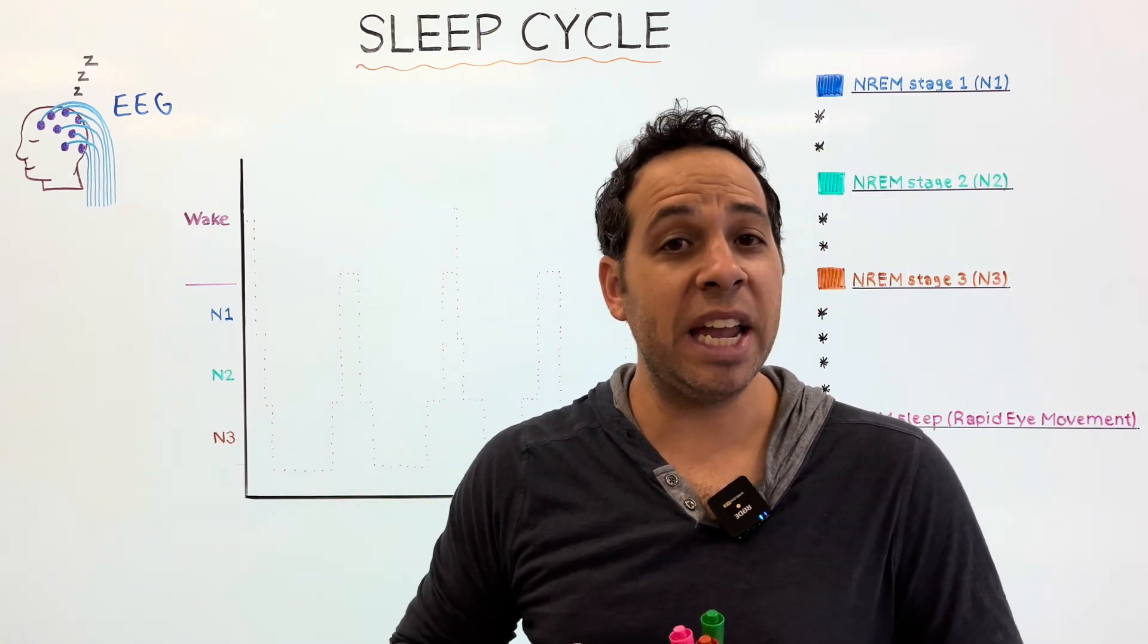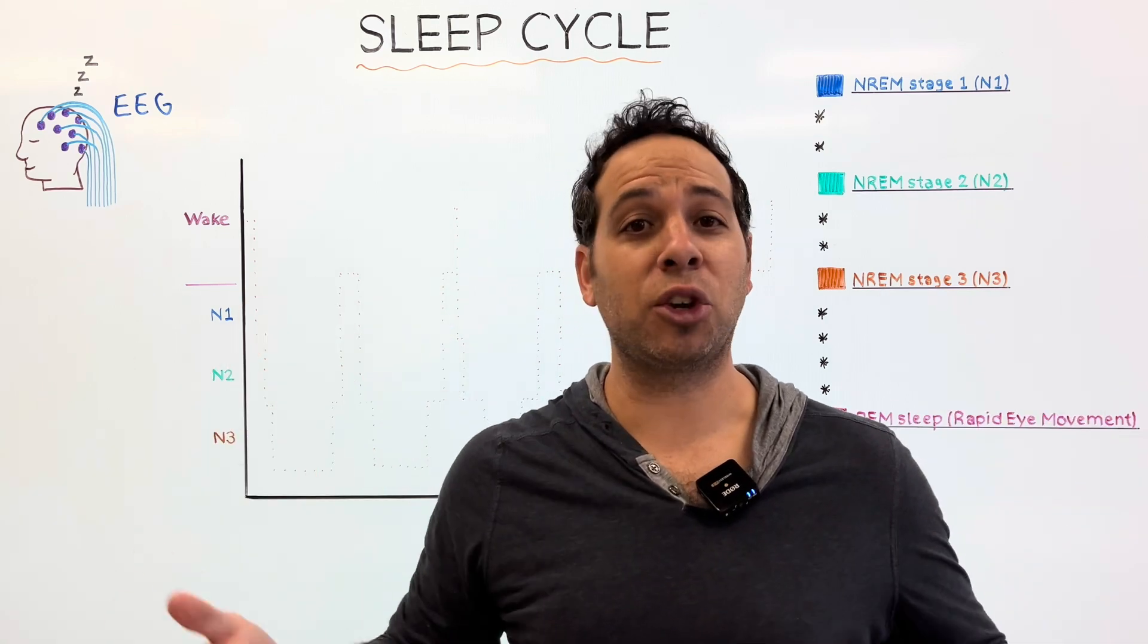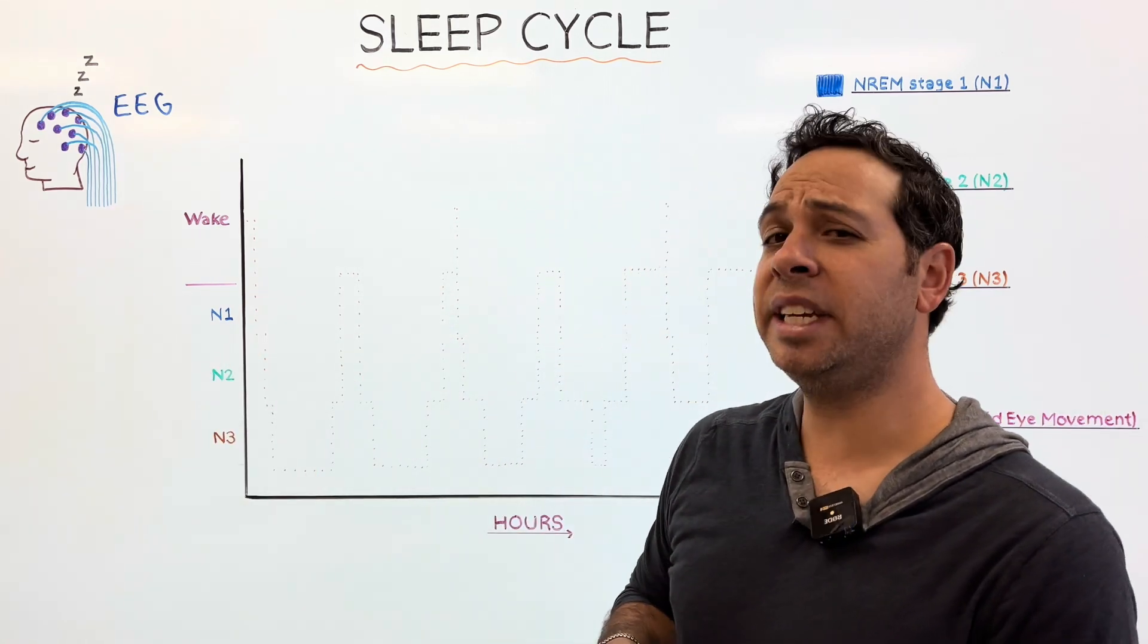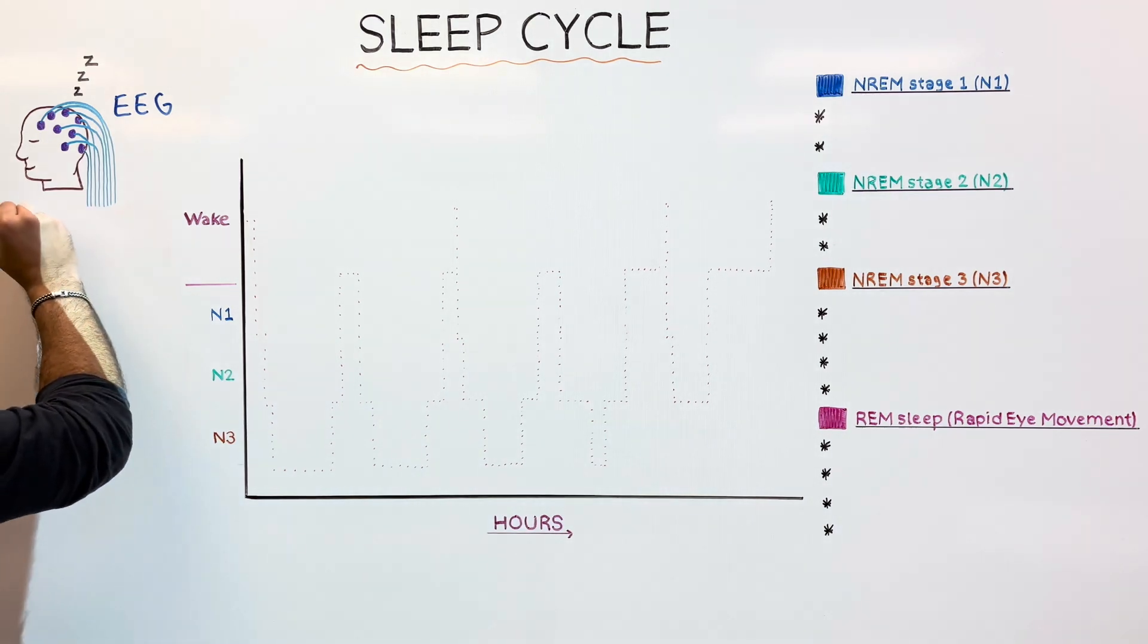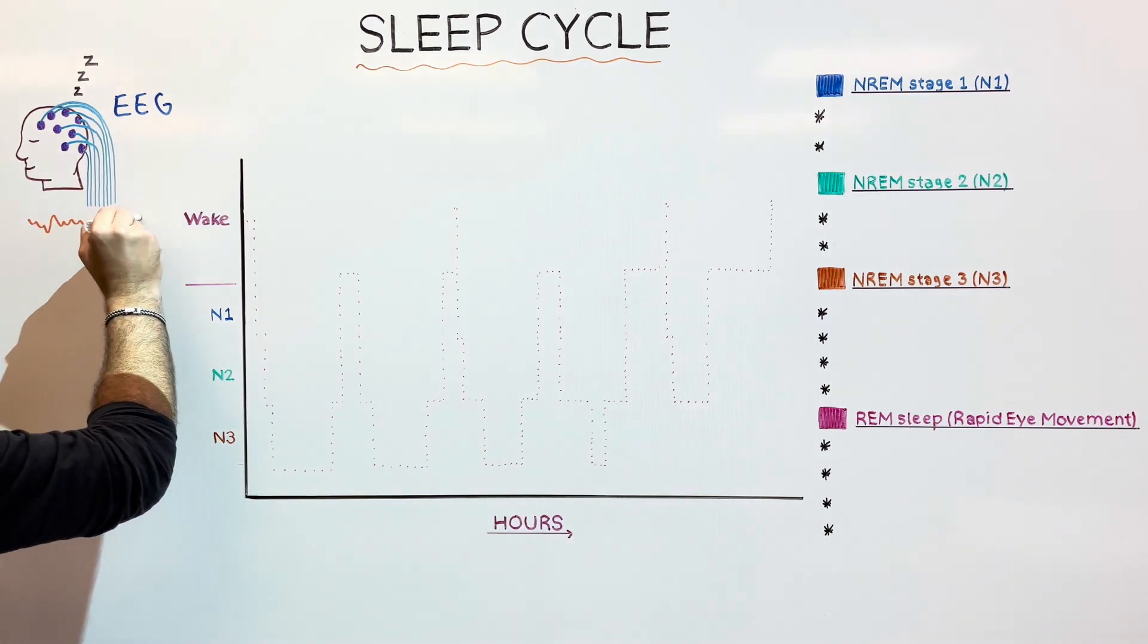Let's start with this. You're awake, you're alert, you're focused on me, you're trying to learn about sleep, right? What would an EEG look like in your head? Well right now, on a computer screen, it would produce what we call beta waves.